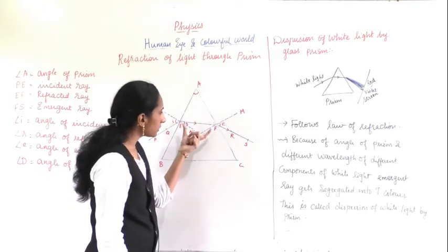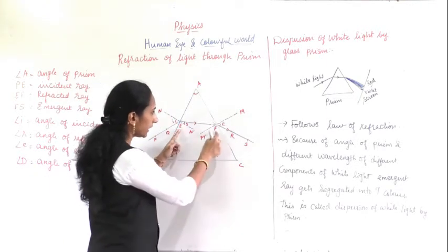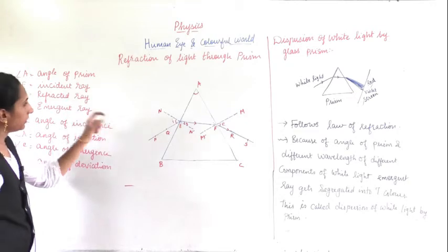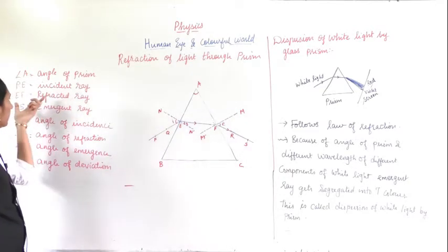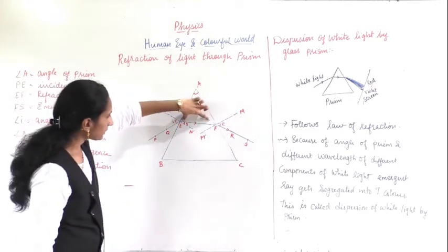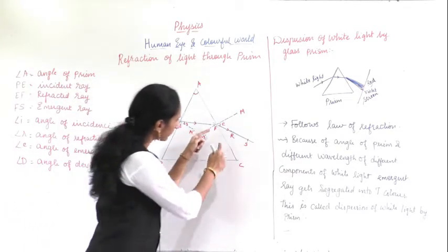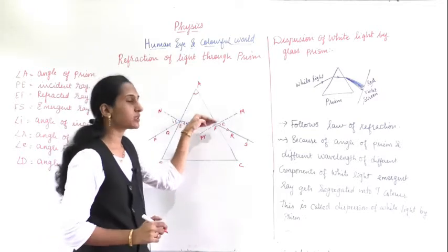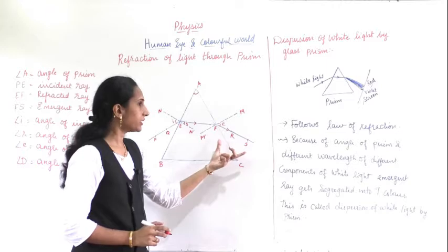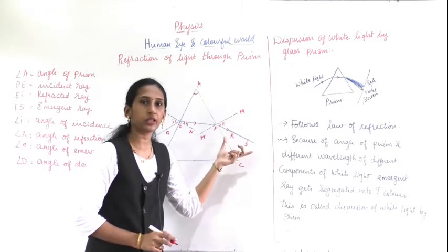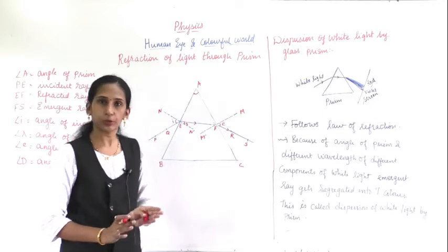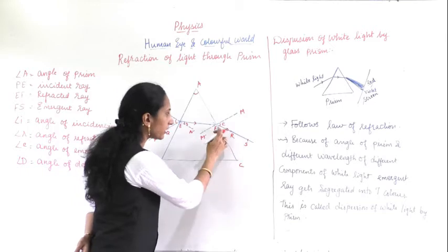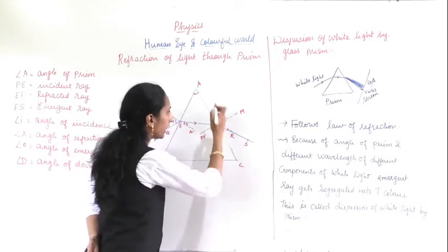PQ is the incident ray. When this ray enters into the prism, EF is the refracted ray. PE is the incident ray, EF is the refracted ray, and FS is the emergent ray — it is called the emergent ray because it emerges out from the prism. Here also an angle is produced, and I have drawn a normal to this emergent ray as it comes out of the prism.